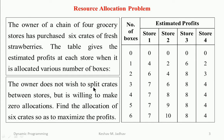The owner does not wish to split crates between stores but is willing to make zero allocations. Find the allocation of six crates so as to maximize profits. One crate or box of strawberries should be allocated to a single store and we have to find the optimum allocation of these boxes so that profit will be maximum.